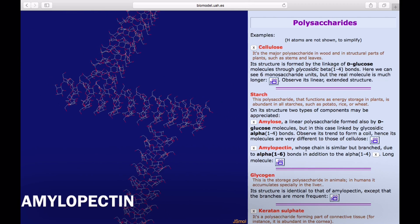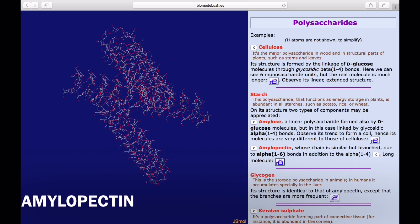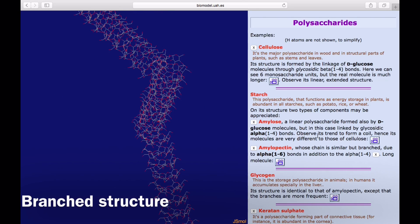If we now compare this to the other polysaccharide found in starch, amylopectin, we can observe that amylopectin has a branched structure.